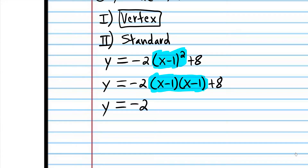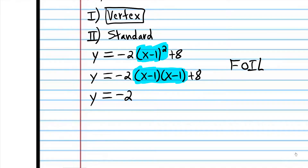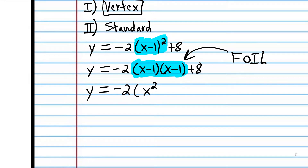To multiply two binomials, we use FOIL to remember how to do it. F stands for first terms: x times x is x squared. Then x times negative 1 is negative x. Negative 1 times x is negative x. And negative 1 times negative 1 is positive 1.